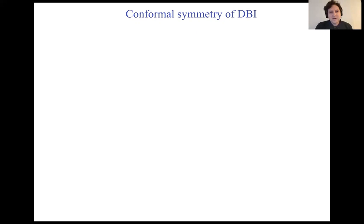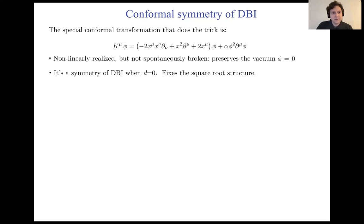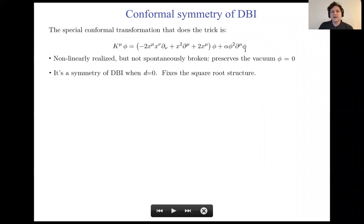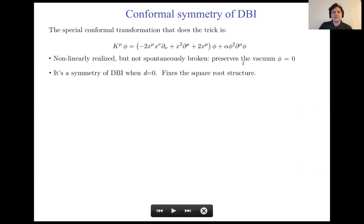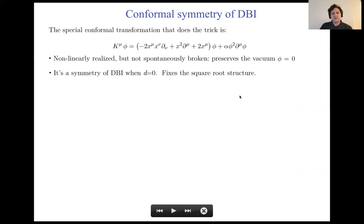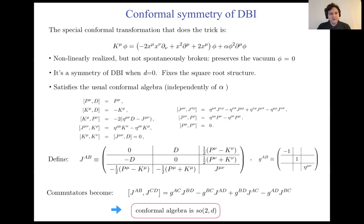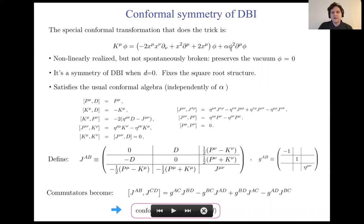The form of the conformal symmetry we found looks like this: it has a linear term that looks like the normal conformal transformation, plus a non-linear term proportional to the coupling constant alpha. It has no term independent of the field, meaning it's non-linearly realized but not spontaneously broken, since the special conformal transformations preserve the vacuum phi equals zero. One can show explicitly this is a symmetry of the DBI action when D equals zero, and this non-linear term fixes the square root structure.